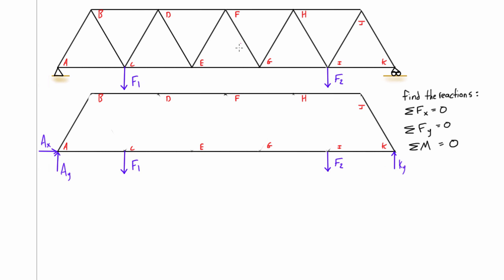If we were looking for the member Fg, the internal force in it, we would just pass a section something like this. This would separate into the left-hand side and the right-hand side. Another thing that we also have to make sure is that we don't pass through more than three members.